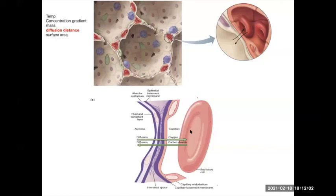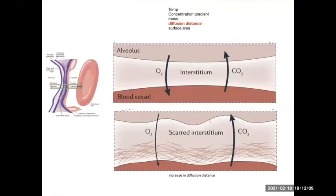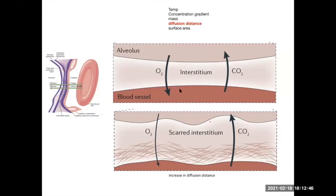Here's the same picture close up: air sac, blood vessel, normal interstitium with a little fluid between them — rapid oxygen into the blood, rapid CO2 out. If you've heard of lung fibrosis — from heavy damage perhaps due to a respiratory infection — the repair process leaves scar tissue, which increases the diffusion distance, making it much harder to obtain oxygen and get rid of CO2. That's lung fibrosis: increasing the diffusion distance.